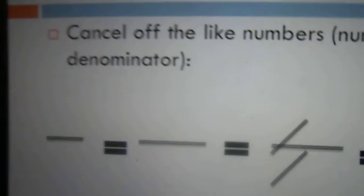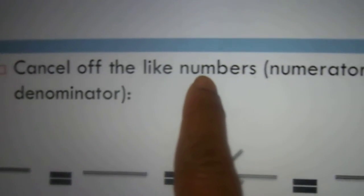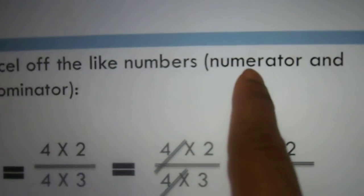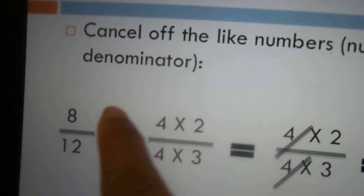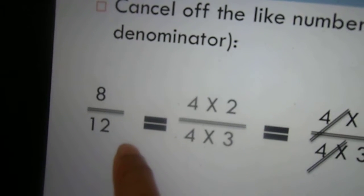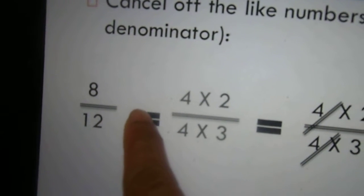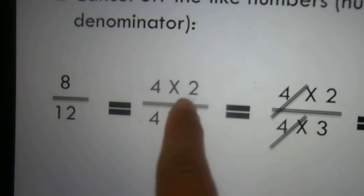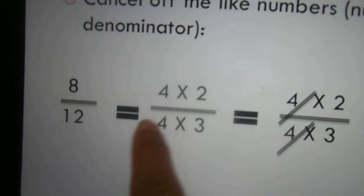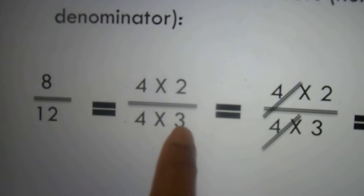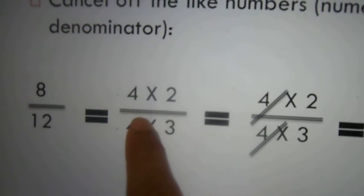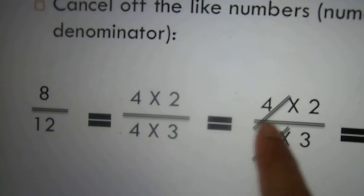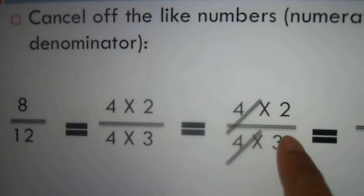Step two: cancellation of like numbers in the numerator and the denominator. Here we have 8 over 12. We can say that 8 equals 4 times 2, and 12 equals 4 times 3. We have 4 as a factor in both the numerator and the denominator, so we cancel them off. The remaining numbers are 2 over 3.